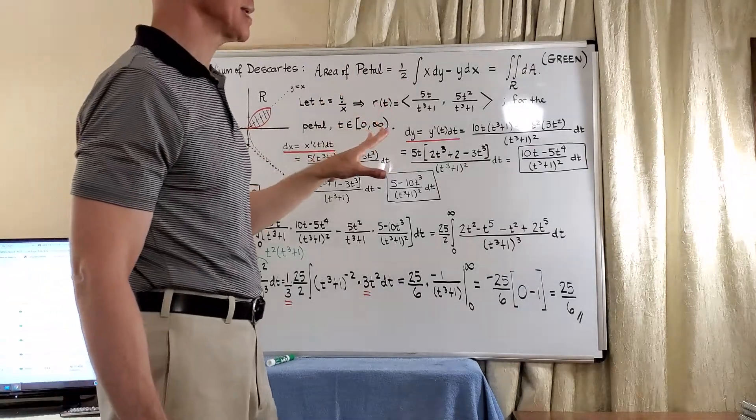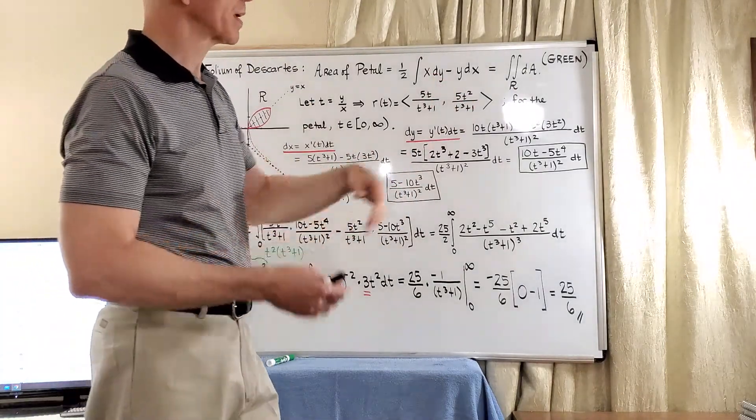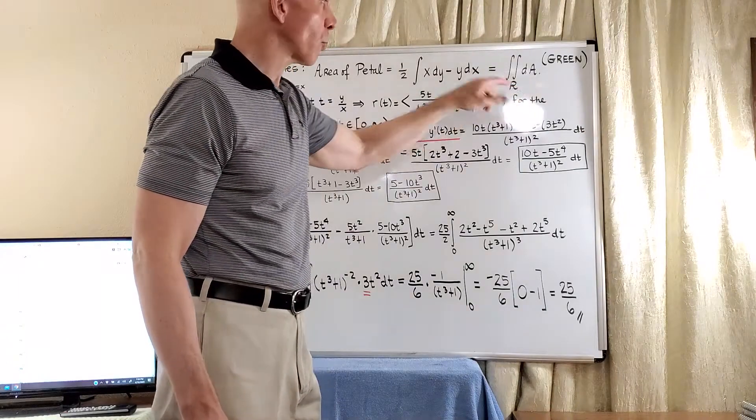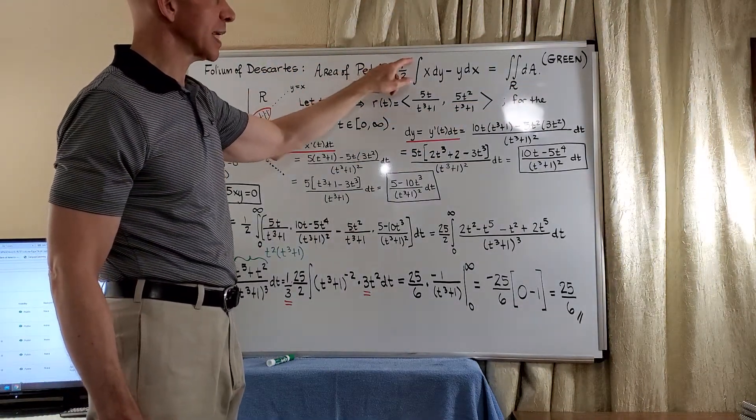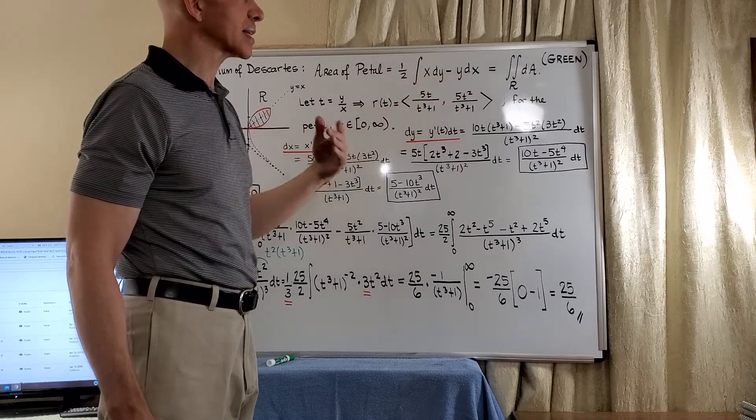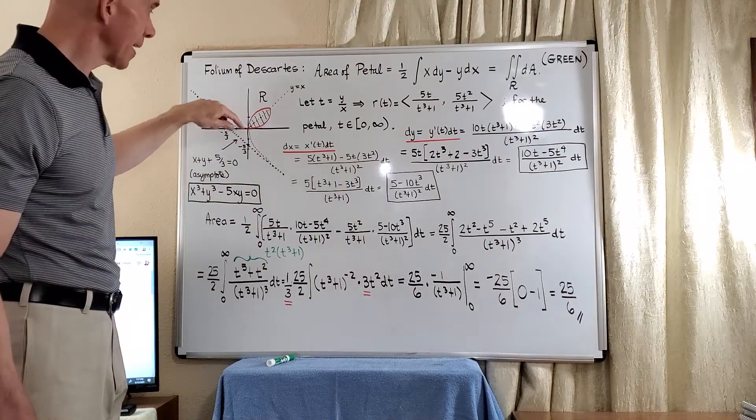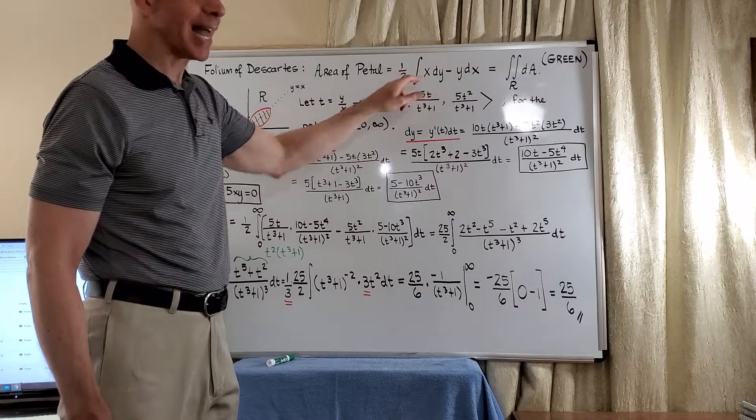What we see is this is the opposite of what we normally do. We're not going to compute the area, the double integral. We're actually going to compute the line integral. So this 1 half times the integral xdy minus ydx will actually give us the area that's enclosed here. The loop here or the petal area will actually be this line integral.